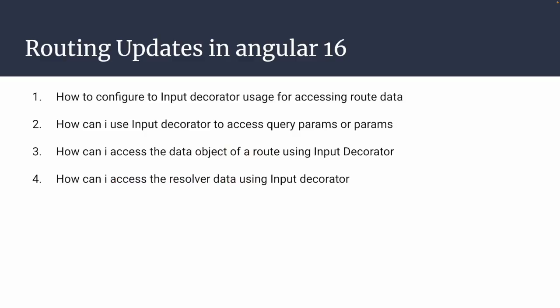Here, we will cover all these scenarios in the routing updates of Angular 16. First, how to configure the input decorator usage for accessing the route data in modular as well as standalone approach. We will also focus on how to access query parameters and parameters using the input decorator. That is the main feature which came in routing — you can use the @Input decorator to access query params as well as normal parameters. You can also access a data object and resolvers. To use this feature, you need to be in Angular 16 and can use either modular or standalone approach.